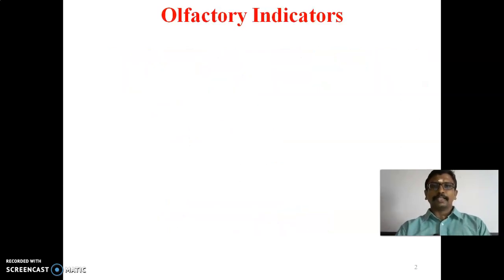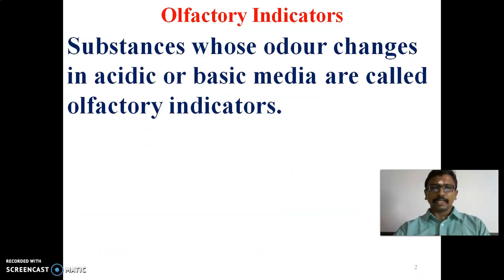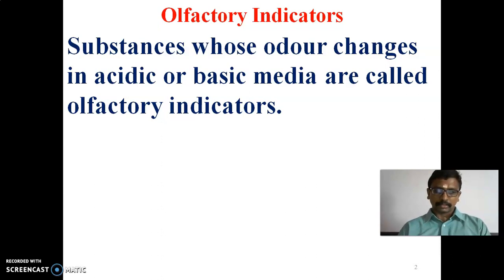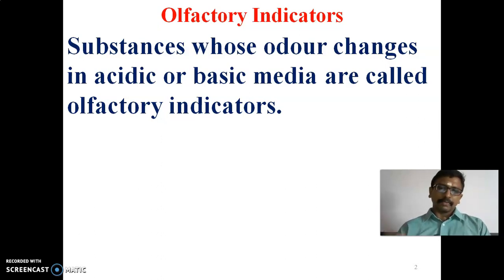The first type is olfactory indicators. Olfactory indicators are substances whose odour changes in acidic or basic media. When we add the olfactory indicators, it will change the odour — the smell will change — and from that we can easily identify whether it is an acidic or basic media.